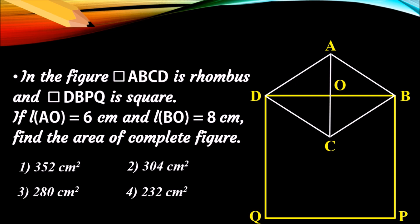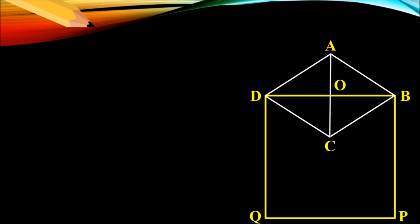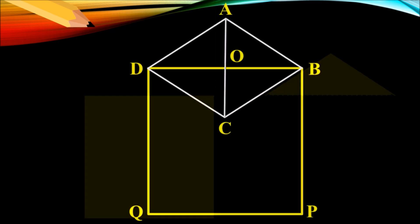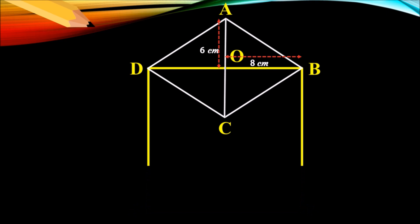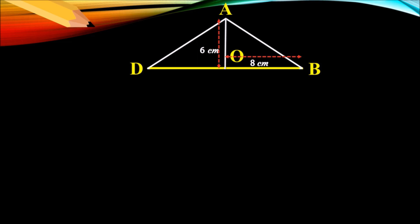Let us concentrate on this figure. We have to find out the entire area. To make it easy, let us divide this figure into two parts by this dash line. The upper part is a triangle and the lower part is a square. Let us separate these figures. Two measurements are given: BO is 8 centimeter and AO is 6 centimeter.